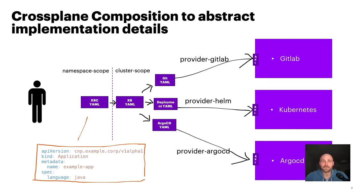So how can we provide a better onboarding experience? Enter Crossplane compositions. A composition is a templated resource which acts as a controller and creates, from a single YAML file, several other YAML files. In Crossplane terms it's an XRC — a composite resource claim — which is namespace scoped. Whenever an XRC is created by a team, a controller will create the cluster-scoped XR, the composite resource, which creates and keeps track of those individual CRs that are then reconciled by their respective provider — for example, the provider GitLab for the GitLab API.